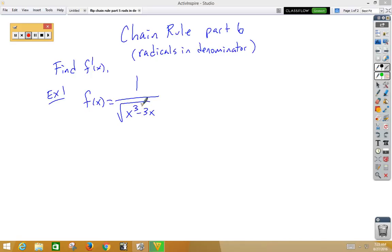So in our first example, I would rewrite this and think of it as x cubed minus 3x to the negative 1 half power. If I rewrite it like that, now I can clearly see my inside function.